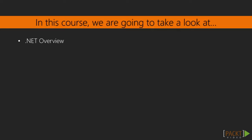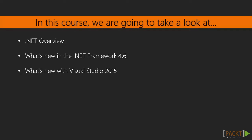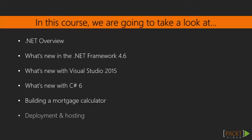In this course we're going to take a look at an overview of the .NET architecture. Then we'll follow up with new features of .NET 4.6, then an overview of Visual Studio 2015, followed by C-Sharp 6 new features. After that we'll begin building an application using some of these new features in C-Sharp — specifically a mortgage calculator. Then we'll finish up by discussing deployment and hosting by actually doing that.